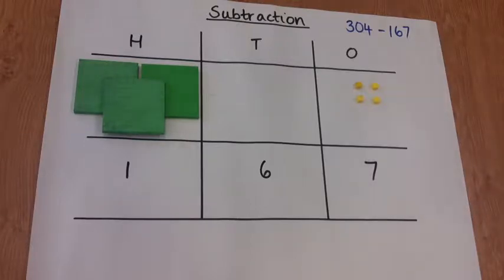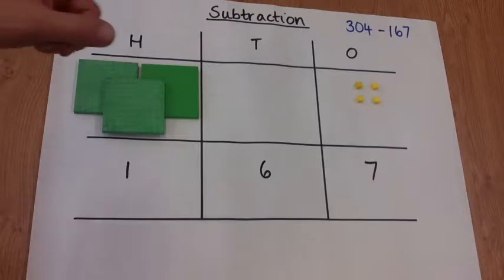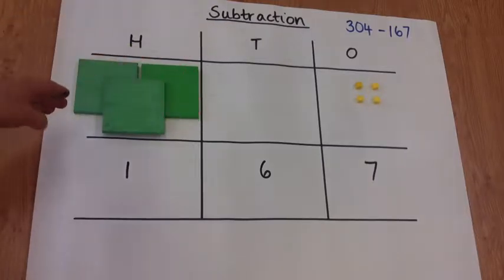So on to the concrete method for subtraction. We've chosen quite a complicated example here. You'll notice that we've laid out the calculation 304 take away 167.